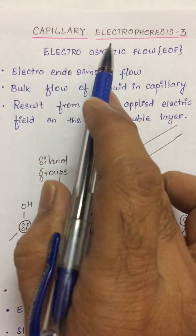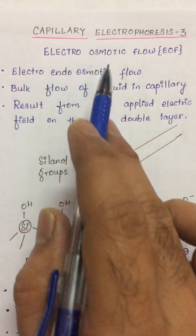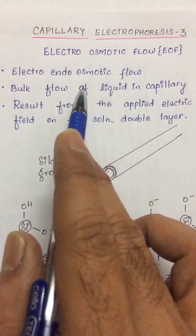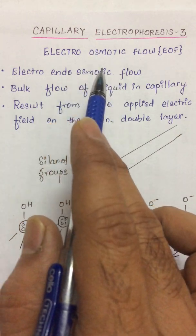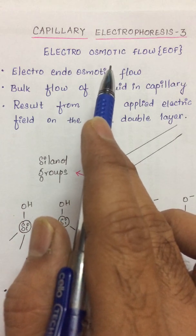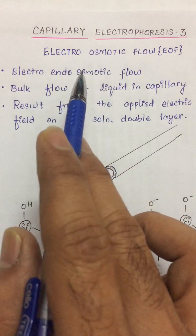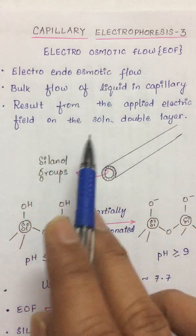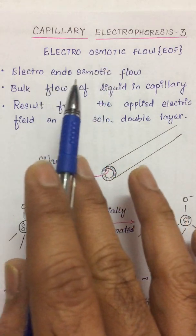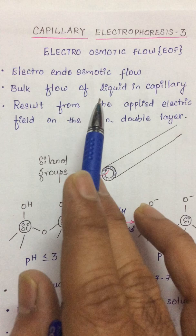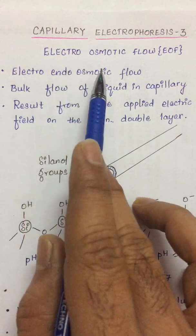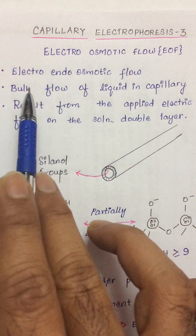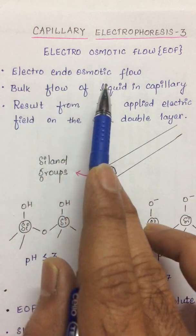Capillary electrophoresis introduction, instrumentation, and principle have been discussed in our last videos. In this video, I will discuss the electro osmotic flow, electrical double layer, and how the analyte components get separated and detected at the detector — why they move only towards the cathode. Electro osmotic flow, abbreviated as EOF, is also called electro-endoosmotic flow.